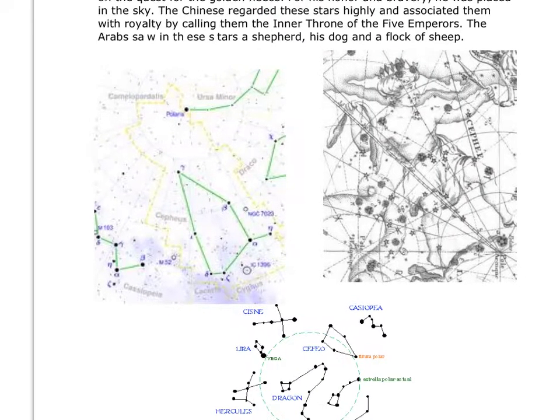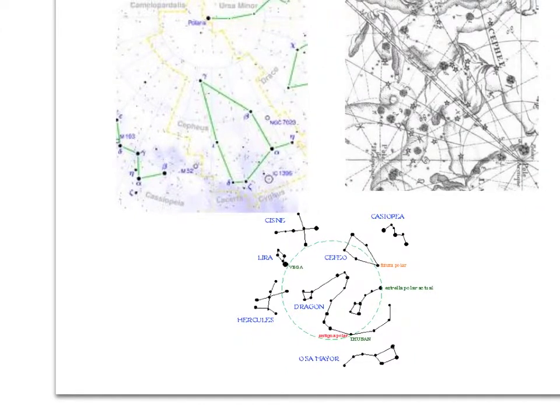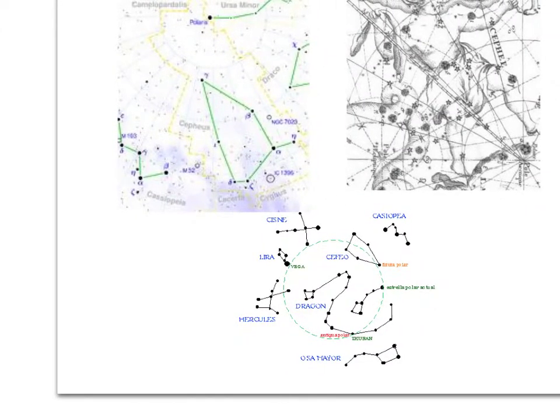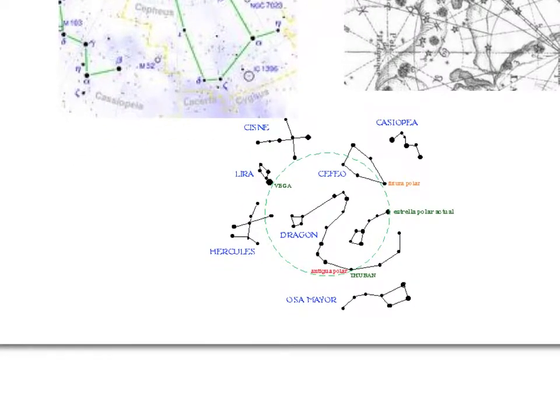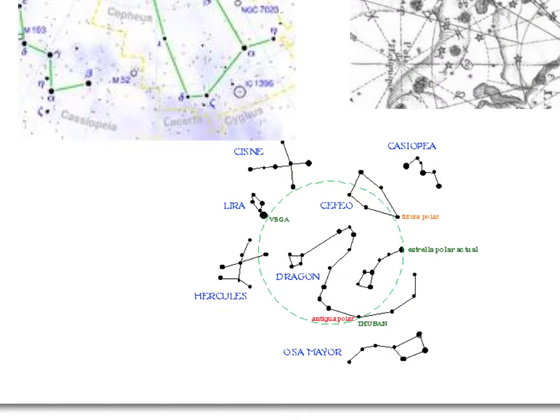So let's see, maybe I even have it down here. Yep, I do. So down here to kind of show you how to find things. Yeah, there's Polaris. And so, okay, so here is Cassiopeia, and here is the Big Dipper.